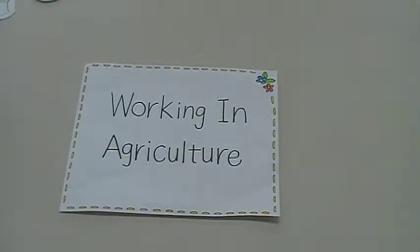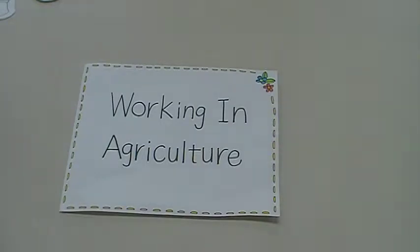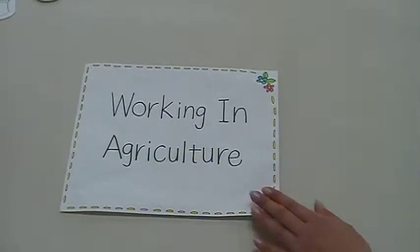An assumption of European colonialism was that agriculture is a scale of development in a society. But their theory only applied to their own European culture. A big difference existed between the economic, social and political structures of traditional First Nations resource gathering and Euro-Canadian farming.